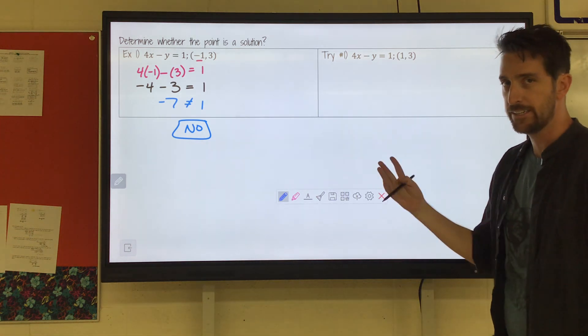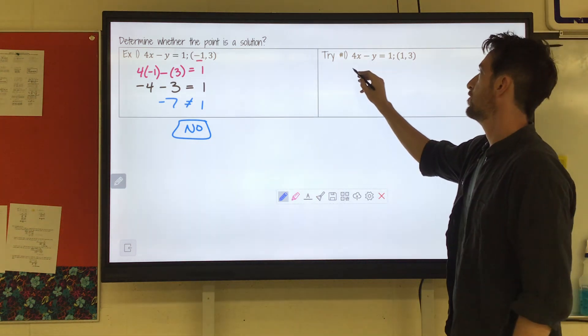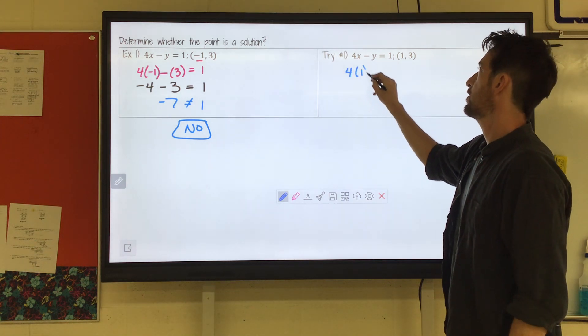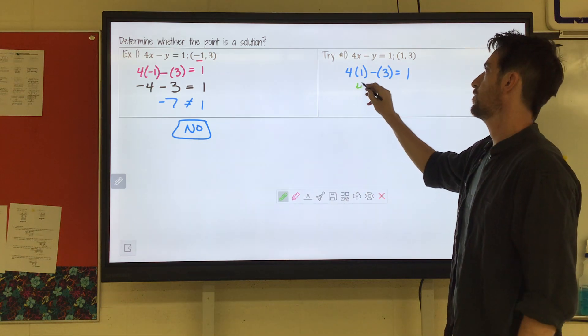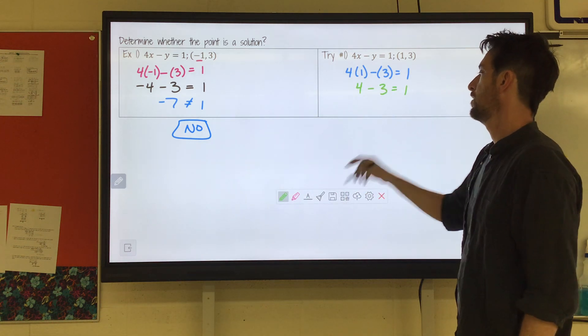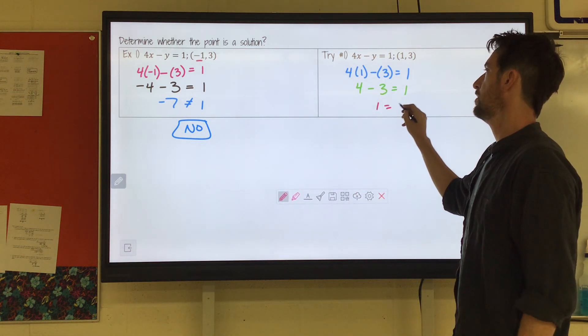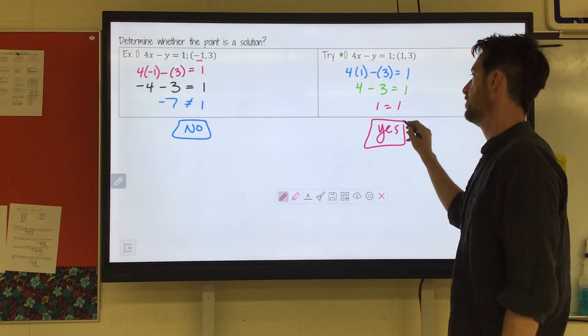I'm going to guess this one is. But hey, who knows? Give it a try. Go ahead and pause it if you'd like and then check back in. So 4x minus y equals 1. 4 times 1 is 4 minus 3. 1 does equal 1. Yes. Cool.